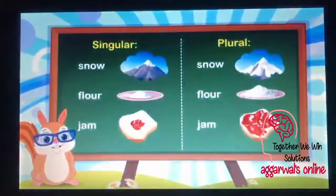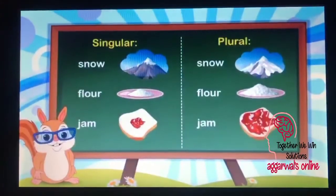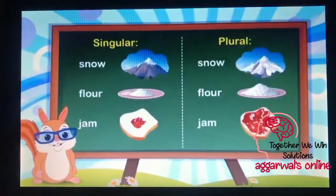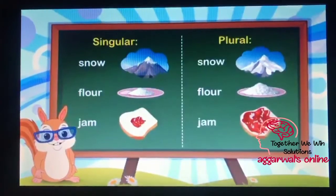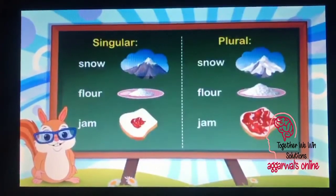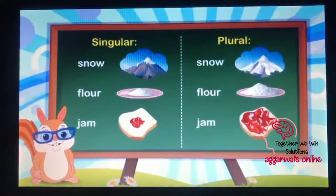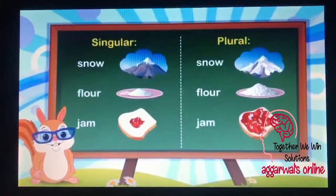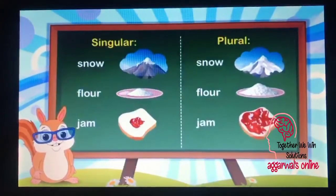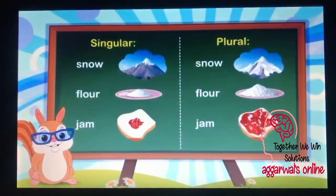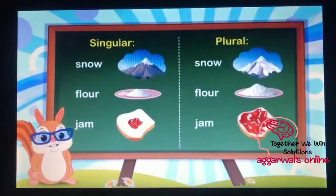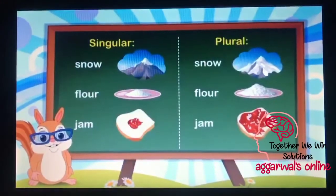Look at some more examples. Snow, flower, jam — all these uncountable nouns remain the same in their plural forms. So this was all about countable and uncountable nouns.